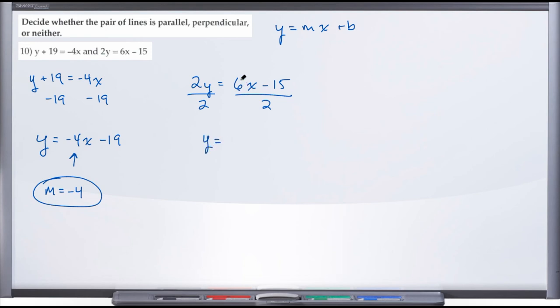And that's going to leave us with y equals 6 over 2, which reduces nicely to 3x minus 15 over 2. Now that it's in this y equals mx plus b slope-intercept form, we can see that our slope is 3.